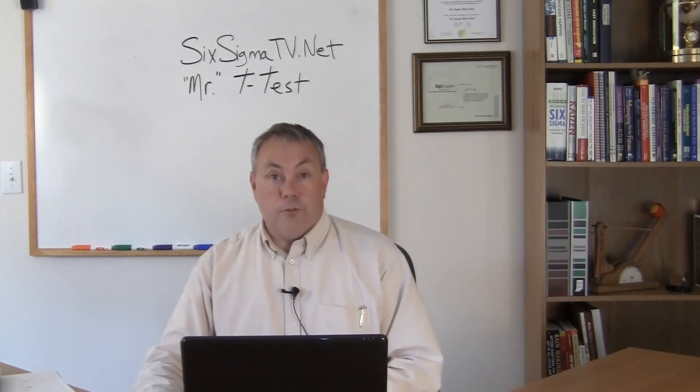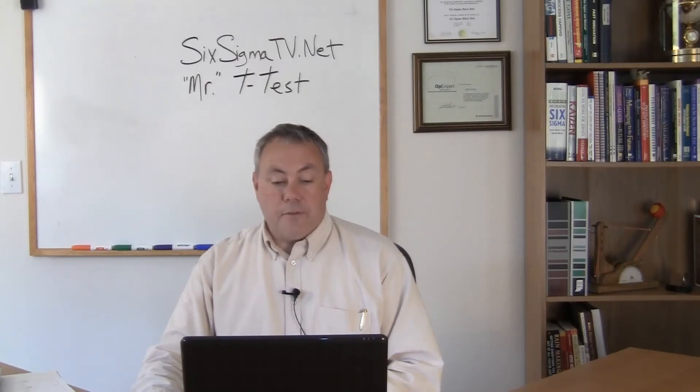We'll use an alpha risk of 5%, or 0.05. That means we will not accept the null hypothesis if the p-value is less than 0.05.